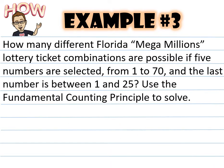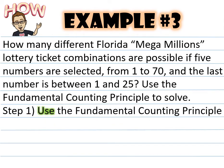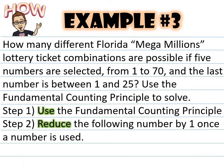Example number three, our final example. How many different Florida mega millions lottery ticket combinations are possible if five numbers are selected from one to 70 and the last number is between one and 25? Use the fundamental counting principle to solve. Notice I didn't say make a tree diagram. That would take us days if not weeks or months to make. Step number one, use the fundamental counting principle. And step number two, reduce the following number by one once a number is used.